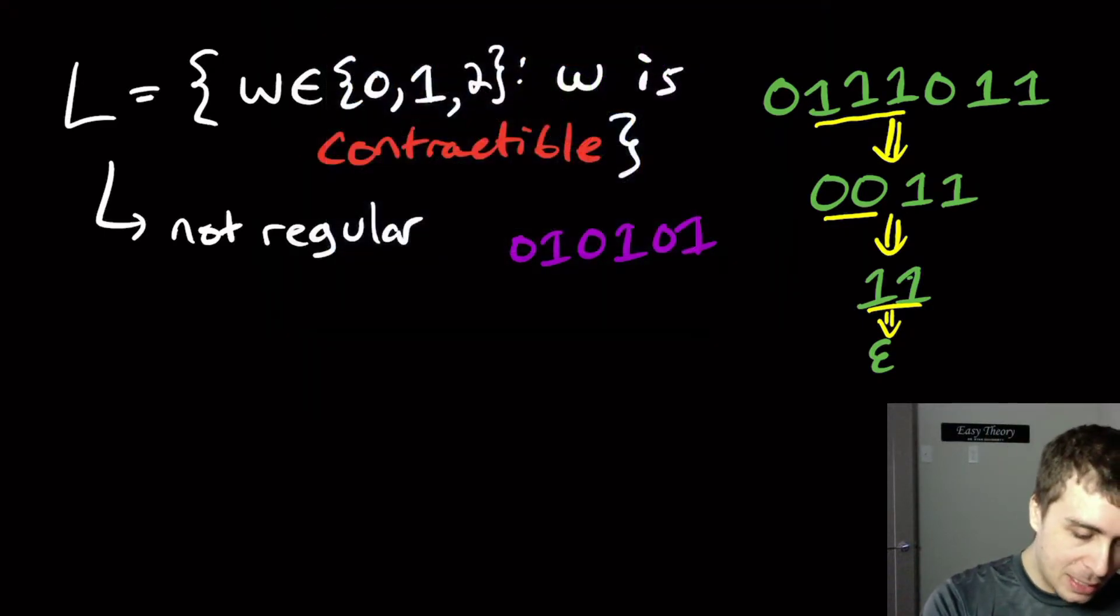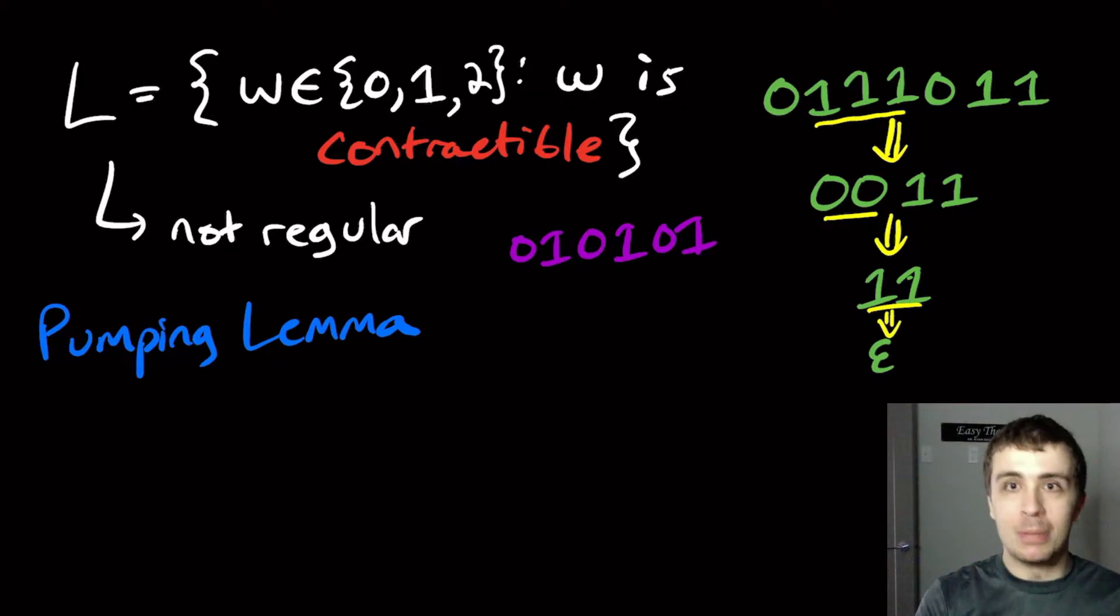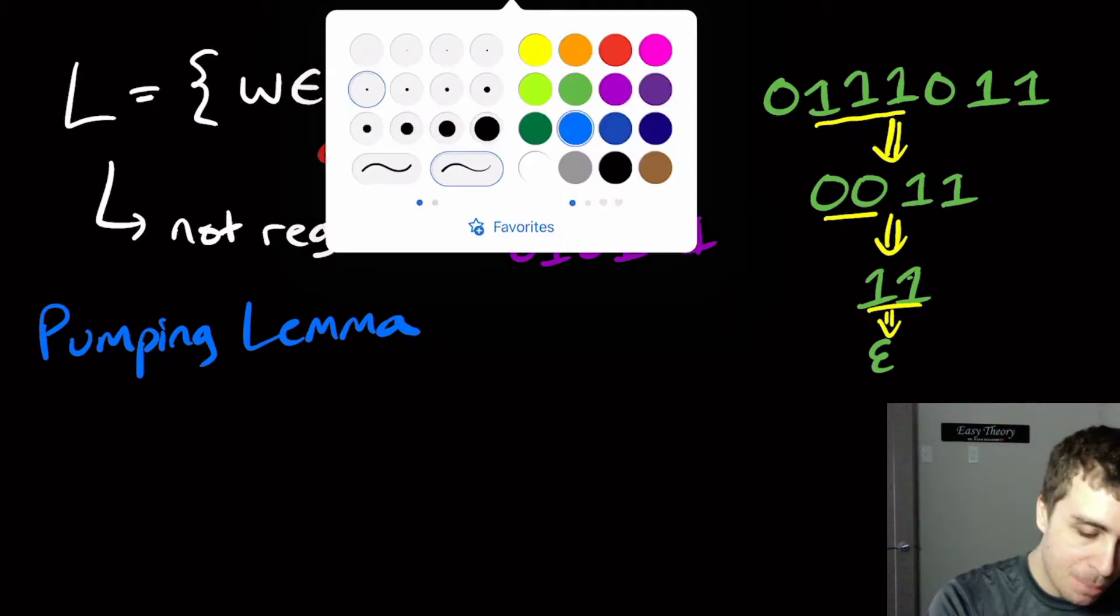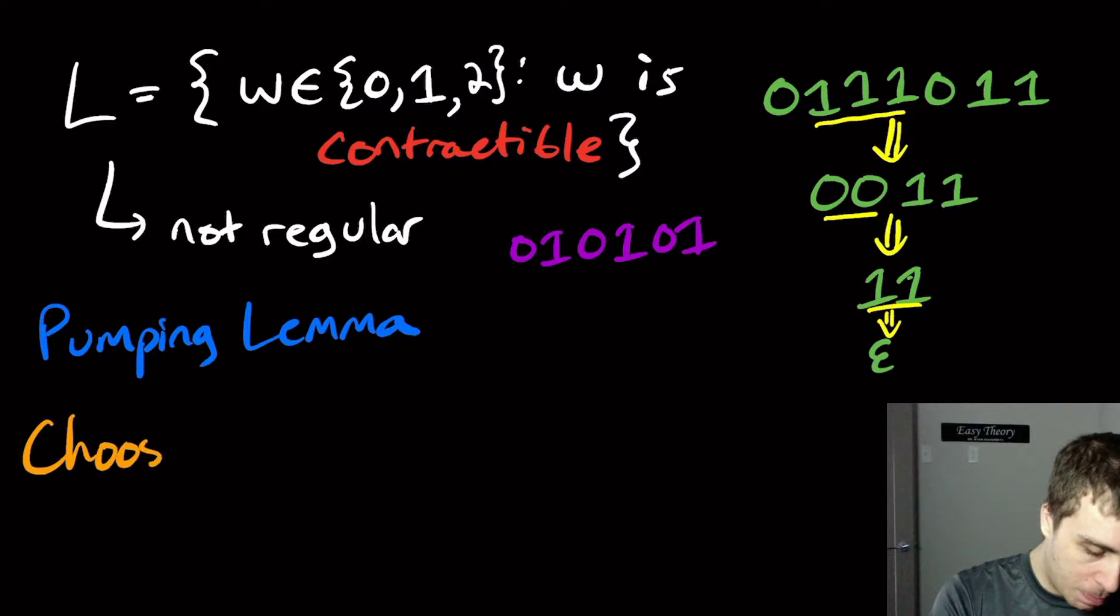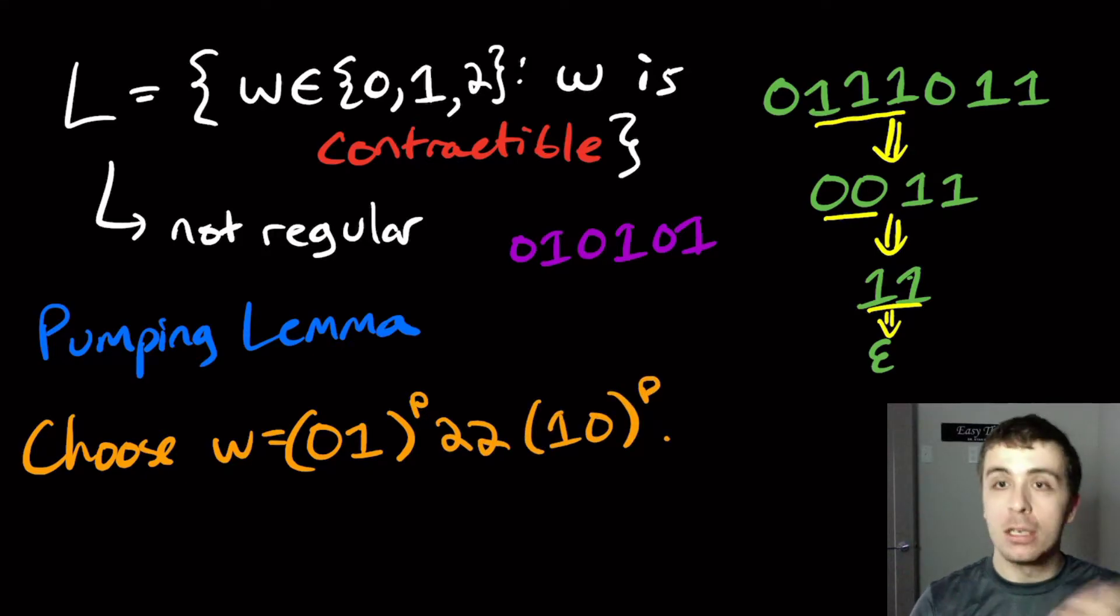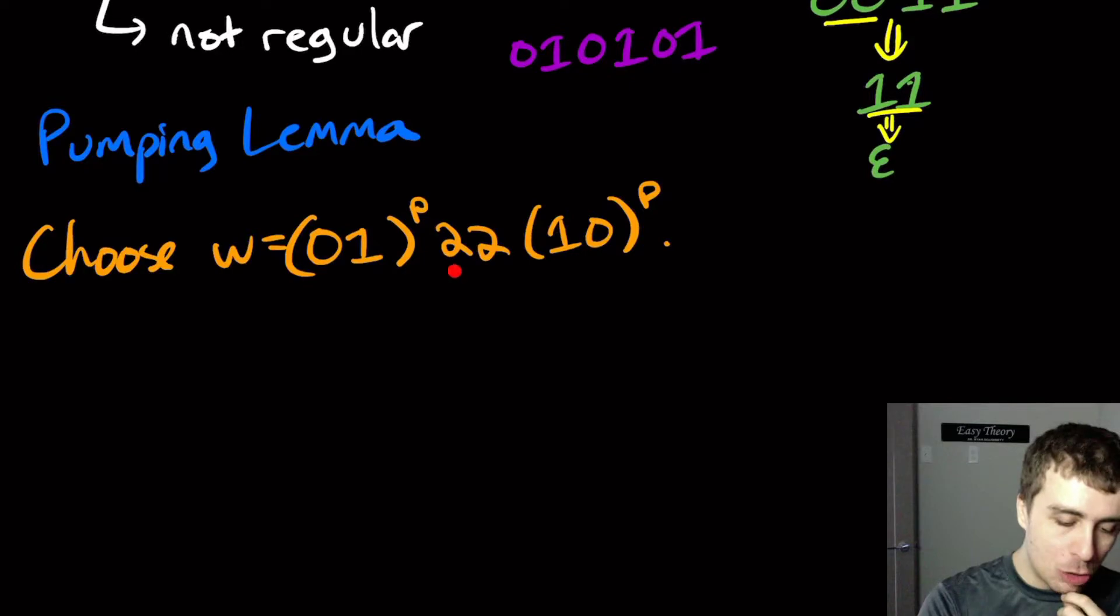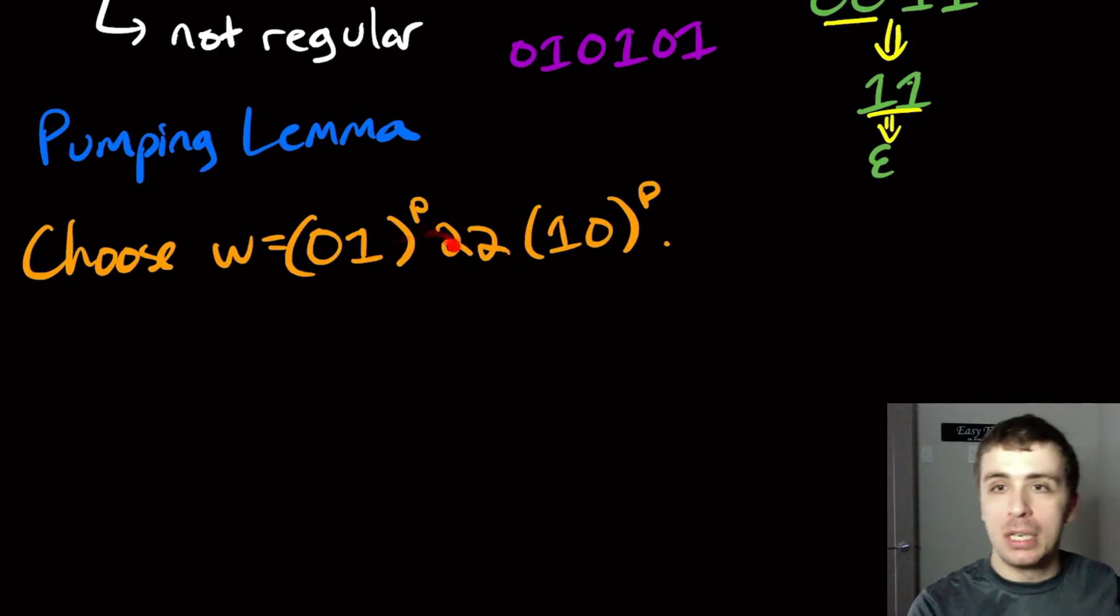So here's the main idea. So we're going to use the pumping lemma, just like we would do with most non-regular proofs. So the pumping lemma, we assume that this is regular, and then therefore, we pick a string that's in the language and length at least p. So here's the string that I'm going to pick. So I'm going to pick w to be (01)^p 22 (10)^p. So clearly this thing has length at least p, and it's contractible.